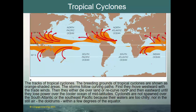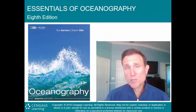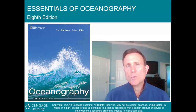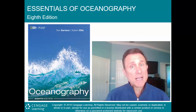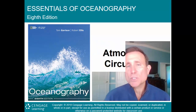Tropical cyclone breeding grounds are in the warm, orange-shaded ocean areas. Storms first move westward with the trade winds, then either die over land or recurve northward and eastward until they lose power over cooler mid-latitude waters. Tropical cyclones are powered by latent heat from warm, humid air; moving over land or cold water removes their fuel. Cyclones are not spawned in the South Atlantic or Southeast Pacific because those waters are too cold, nor in the doldrums within a few degrees of the equator due to insufficient Coriolis effect. That wraps up atmospheric circulations; the next lecture will cover ocean circulations.